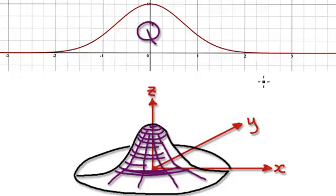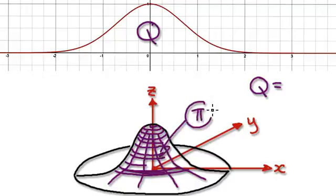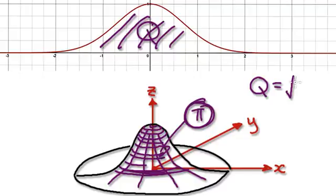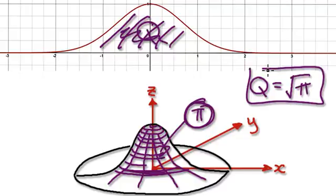As it turns out, Q equals the square root of the volume here. Remember, the volume of this thing here is pi. So this area here is equal to the square root of the volume. Another way of stating it is that Q squared equals V.